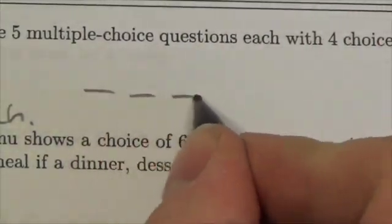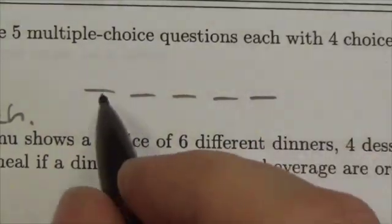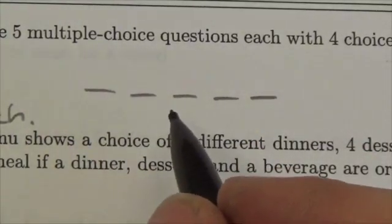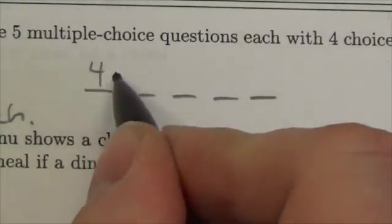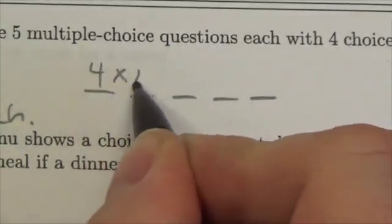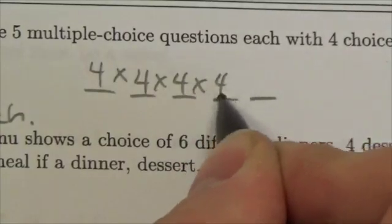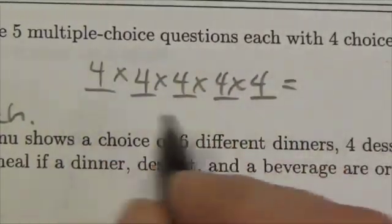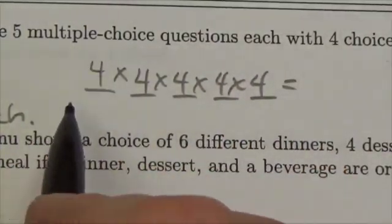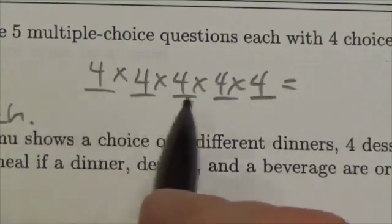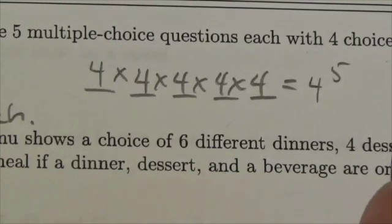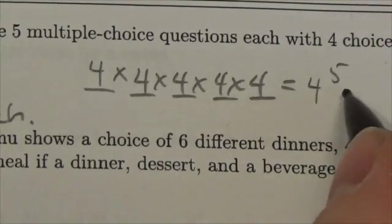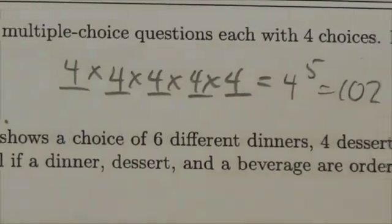There are five tasks — five questions: one, two, three, four, five — and each one has four ways of doing it. So this is going to be four times four times four times four times four. For each task we multiply the number of options, so this ends up being four to the fifth.